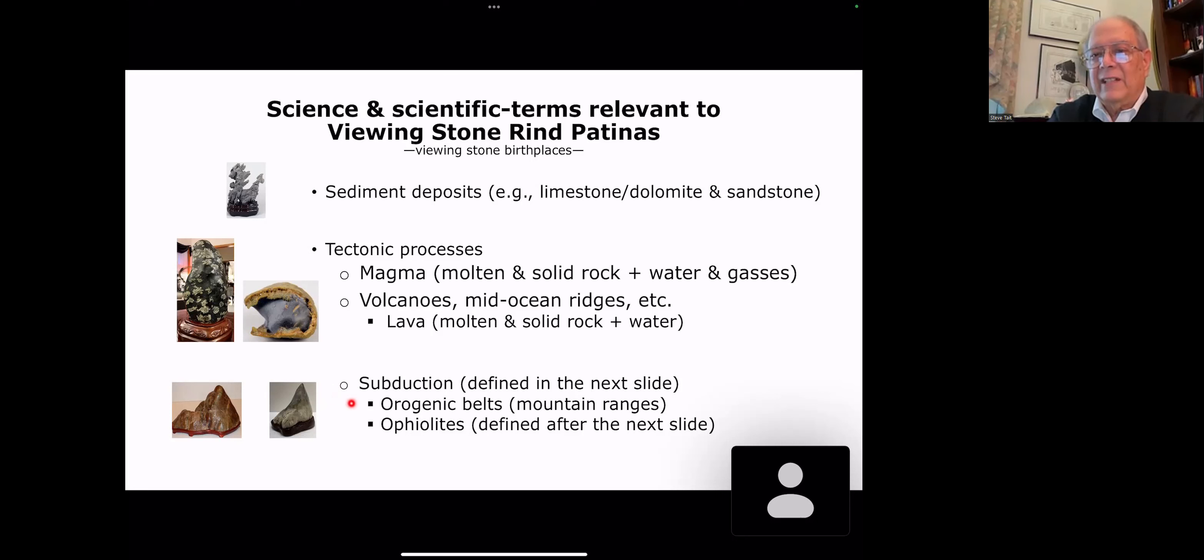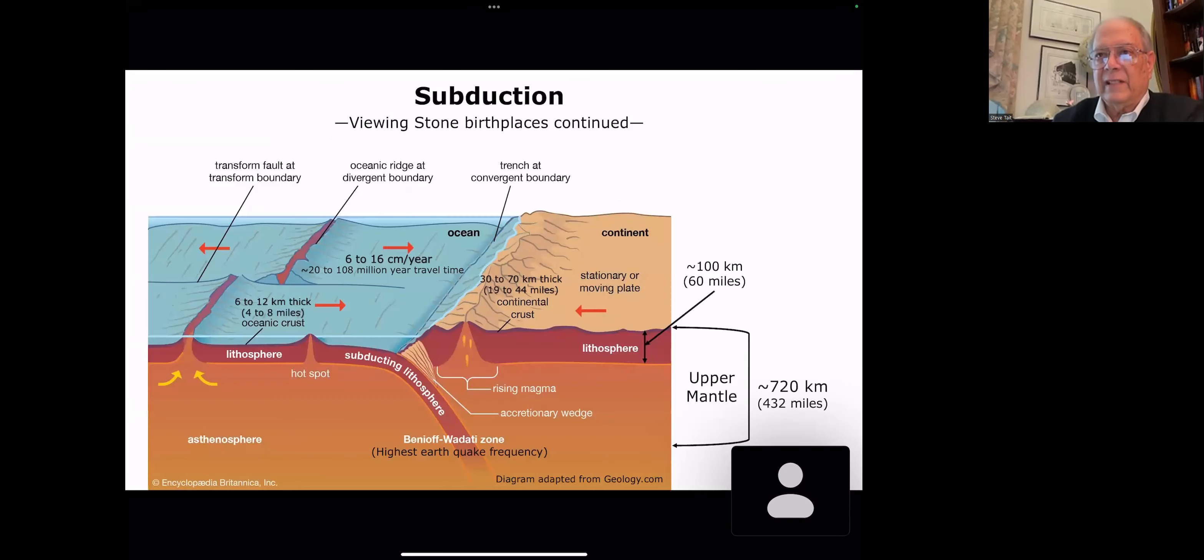Subduction creates your orogenic belts or your mountain ranges and it creates ophiolites. I can't define ophiolites until I talk about subduction. But I've got two examples here of viewing stones that originated from ophiolites.